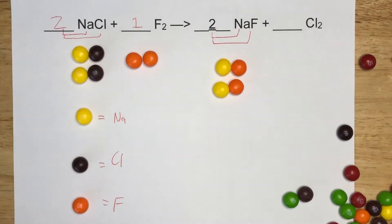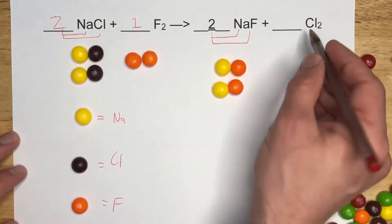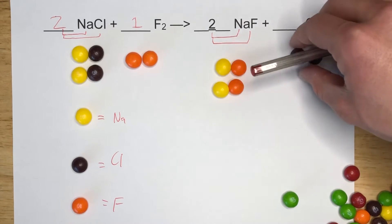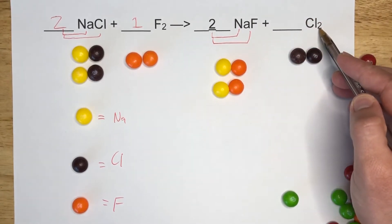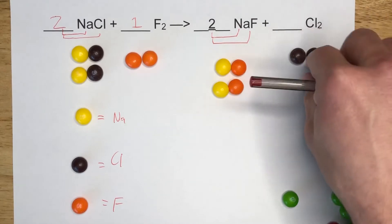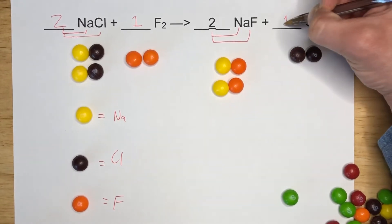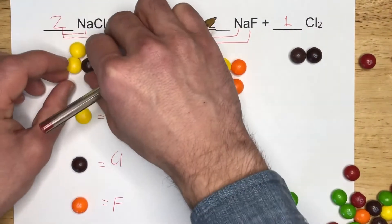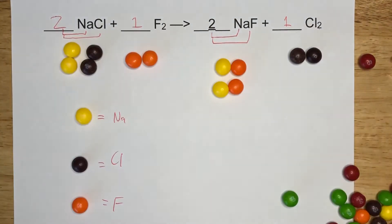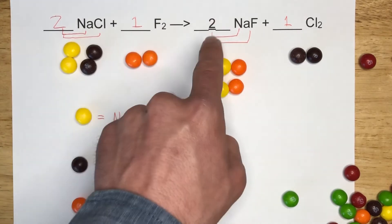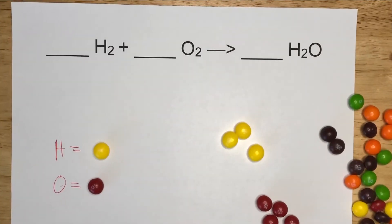Let's double check everything else on the right hand side. The only thing we haven't yet accounted for is the Cl2. There are two Cls on the right hand side. They're bonded together because there's a little two telling us that there's two Cls bonded together. That's all we need. We just need one molecule of Cl2 and we're good to go. If you count them all up, you got two and two, you have two and two, and two and two. Everything is balanced, and we did that with coefficients. So the final balanced equation says two NaCl plus one F2 produces two NaF plus one Cl2.